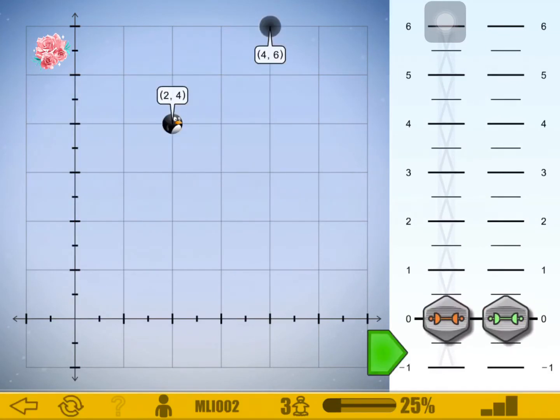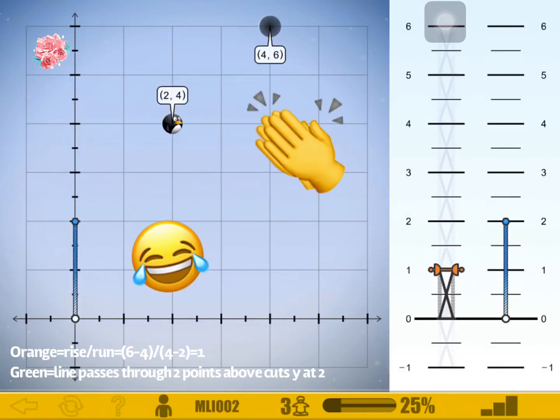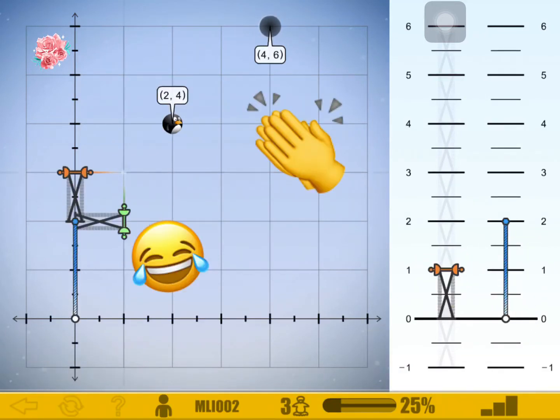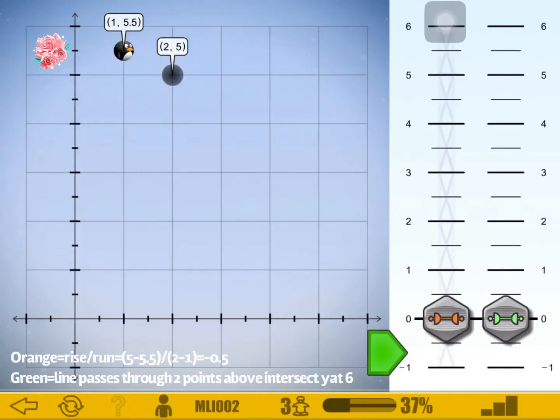So now we're going to do the same thing. We are going to move it to the necessary point using the equations on the screen. Now this one's a little trickier - you're gonna have to move the levers up all the way to the top or somewhere around there because the hole is facing downwards.